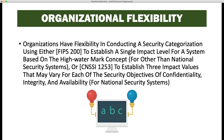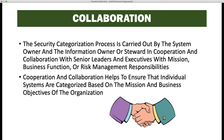The security categorization process is carried out by the system owner and the information owner or steward, in cooperation and collaboration with senior leaders and executives with mission, business function, or risk management responsibilities. Collaboration helps ensure that individual systems are categorized based on the mission and business objectives of the organization, and that those systems more critical to the mission are normally rated at a higher level.